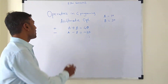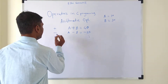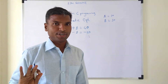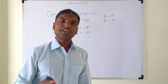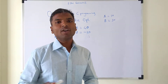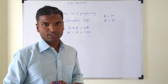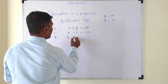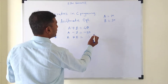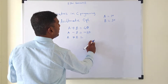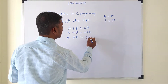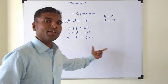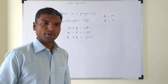Next is multiplication. Multiplication is not a unary operator, because for multiplication we must need more than one operand. So if we write down the example a into b, the value will be 300. So this is just the multiplication of any two numbers.